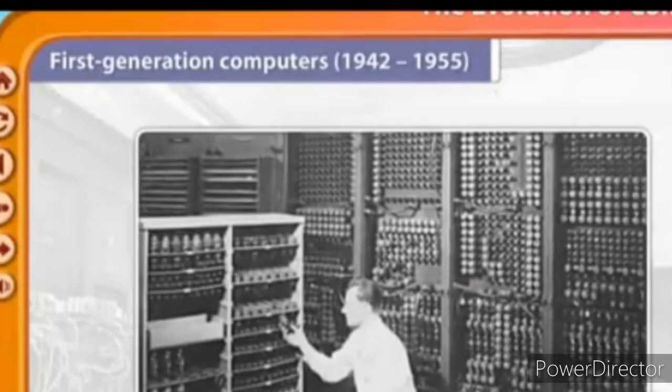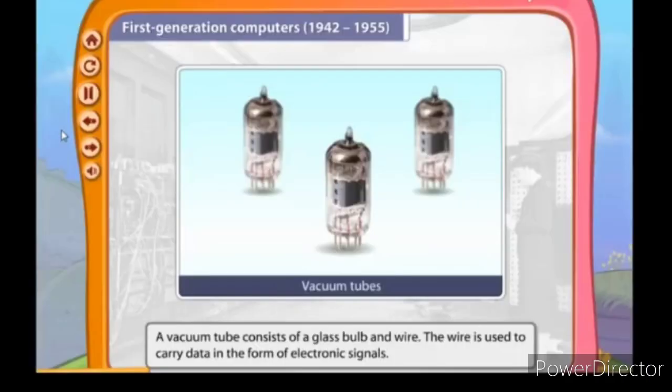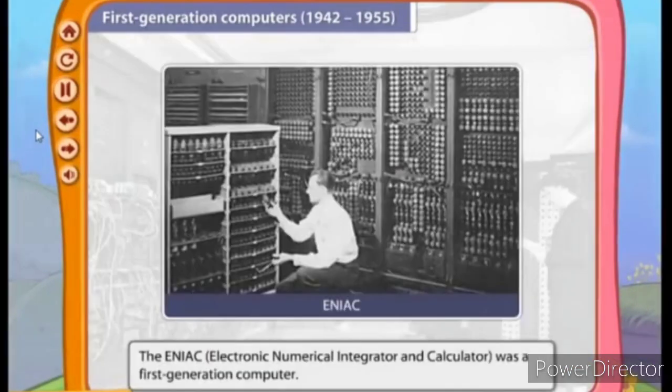The computers that were developed from 1942 to 1955 were called the first generation of computers. The first generation of computers used vacuum tubes. A vacuum tube consists of a glass bulb and wire; the wire is used to carry data in the form of electronic signals. The ENIAC — Electronic Numerical Integrator and Calculator — was the first generation of computer.